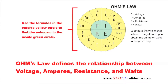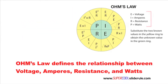What we have here is known as an Ohm's Law Wheel. This wheel contains all the formulas to allow you to calculate any unknown value, be it voltage, amps, resistance, or watts, when you know at least two of these.